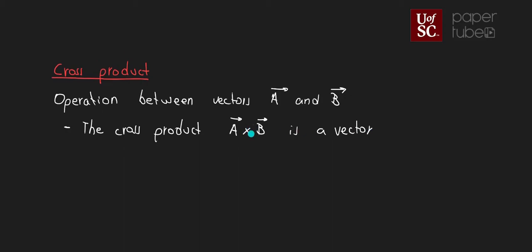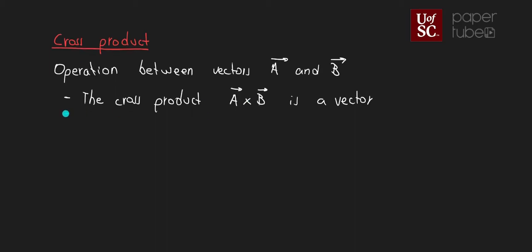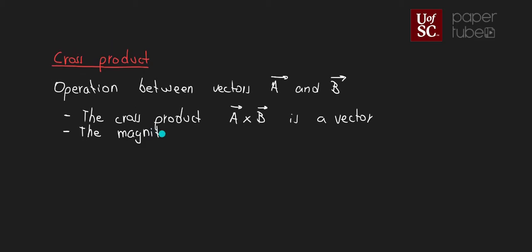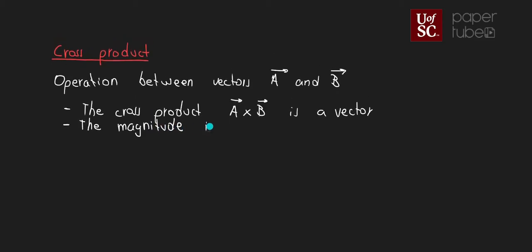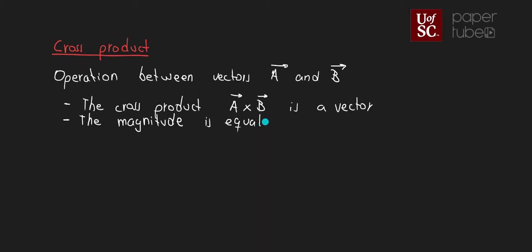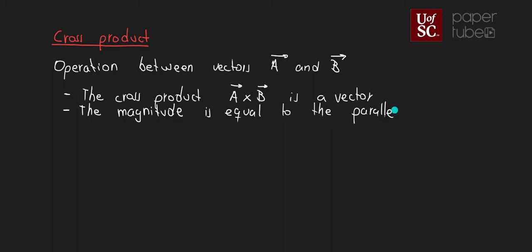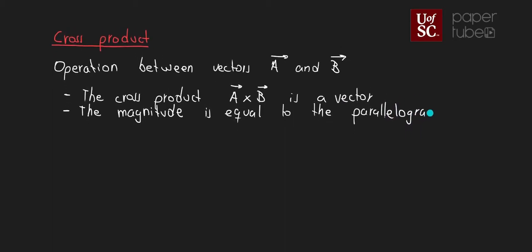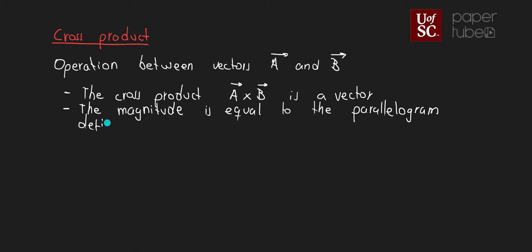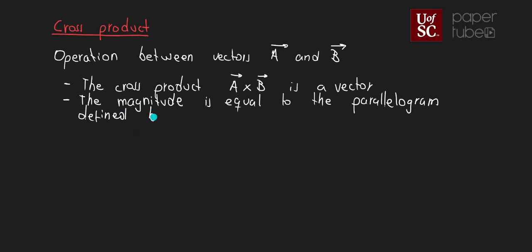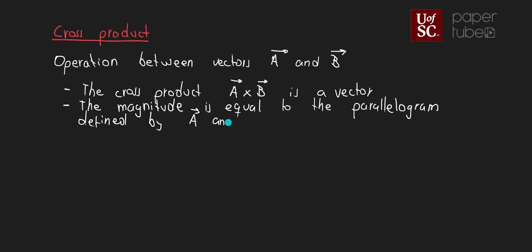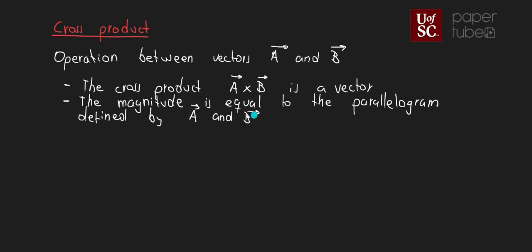And here is the symbol we're going to use for the cross product, is that X. The other thing we're going to see is that the magnitude of this vector is equal to the parallelogram and defined by A and B.